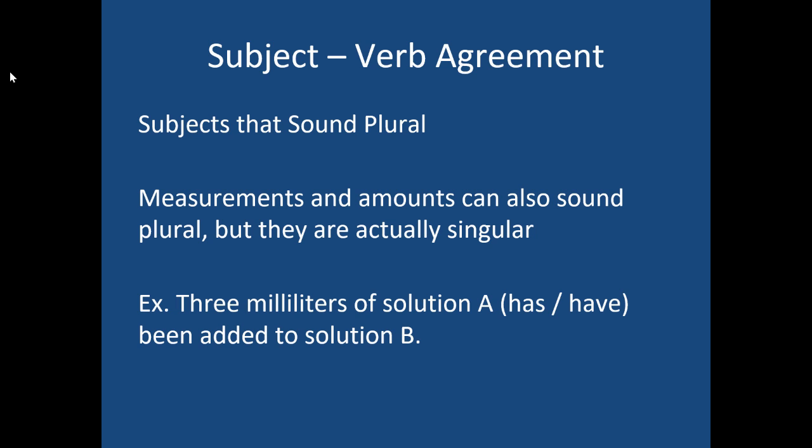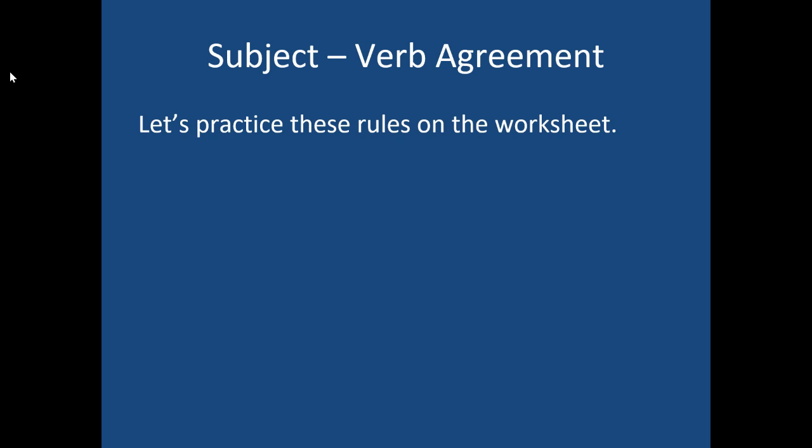Lastly — and this isn't on the note sheet — measurements and amounts can also sound plural but are treated as singular. For example: 'Three milliliters of solution A has or have been added to solution B.' Three milliliters sounds plural, but any measurement or amount is always treated as singular. So you'd say 'three milliliters has been added to solution B.' That's just the rule. With that said, practice those rules on your worksheet and check your answers.